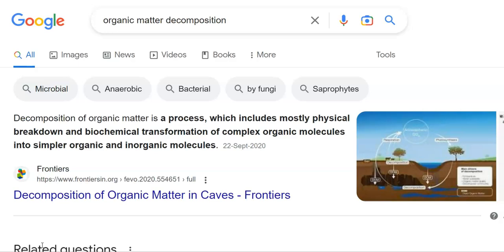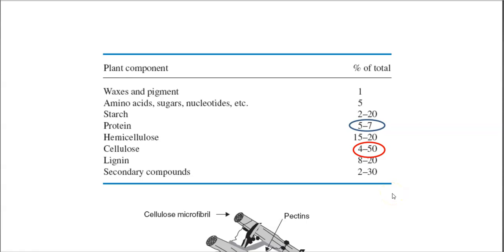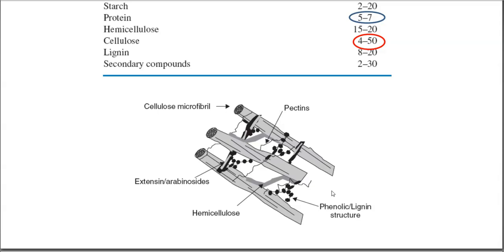Next we try to look at what are all dominantly present in the soil organic matter that is of plant origin. The main constituent of plant-origin based soil organic matter is cellulose, which constitutes 40 to 50 percentage. Apart from that, it is found to contain hemicellulose of 15 to 20 percentage, and the toughest molecule to get degraded — lignin — constitutes 8 to 20 percentage. Apart from that, waxes, pigments, amino acids, amino sugars, as well as nucleotides are all minor soluble components. Starch is again another important component that may dominate in the soil organic matter.